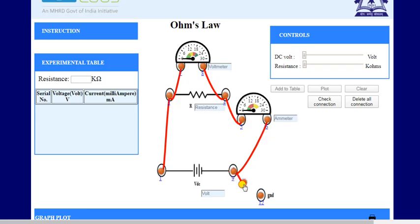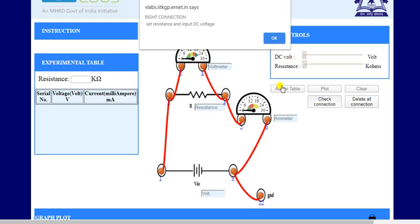Then point number 9 connected to point number 12, that is ground. There is an option that you can check that your connection is okay or not. By clicking on check connection, a message will display: right connection.